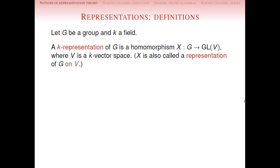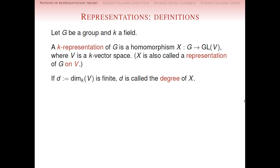Notions of representation theory. Well, you can do this for any group and for any field, and then you have a K-representation — it's just a homomorphism of the group into the general linear group of a vector space. This is also called the representation of G on V, and almost all of the time we will consider finite dimensional representations, so the vector space V has finite dimension.